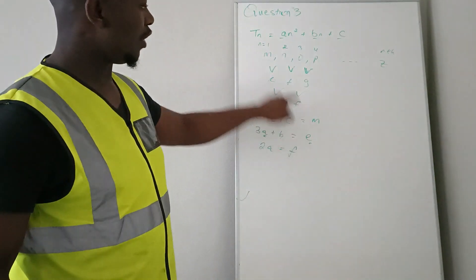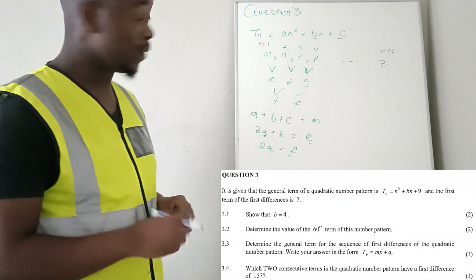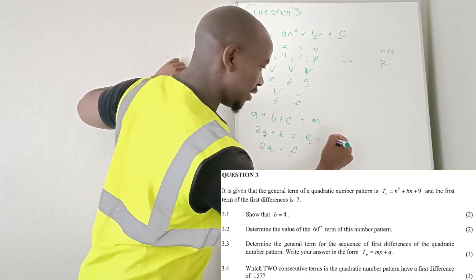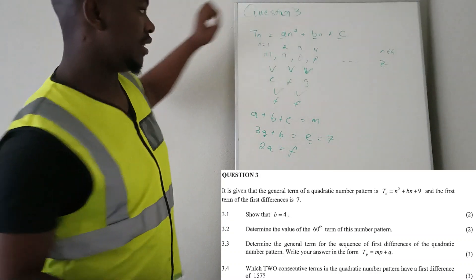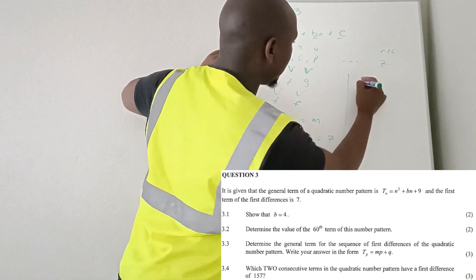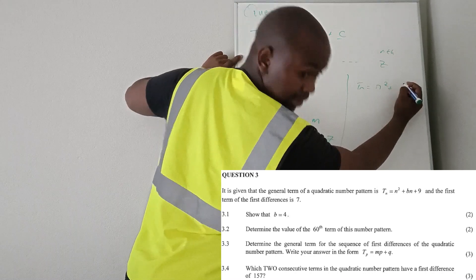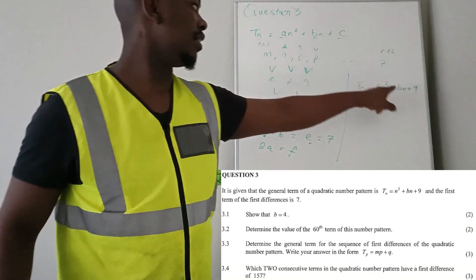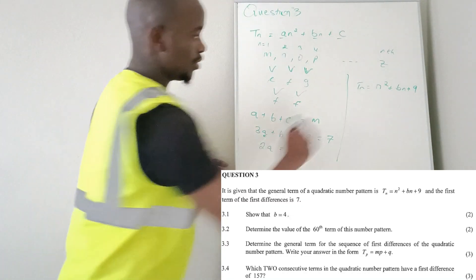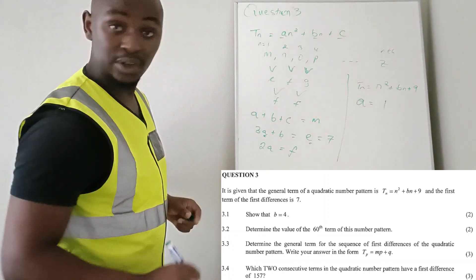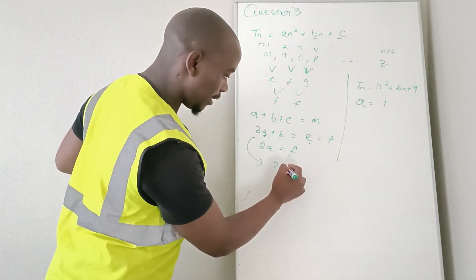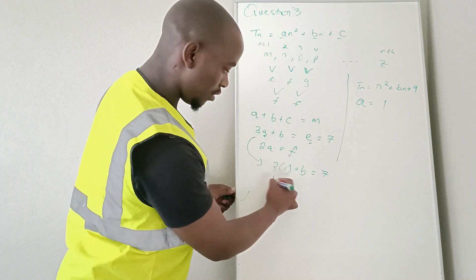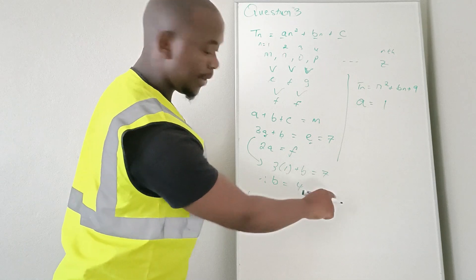We are given that the first term of the first difference, e, is equal to 7. From the equation Tn = n² + pn + 9, we can see that a = 1 and c = 9. So we use 3a + b = e: 3(1) + b = 7, therefore b = 4. We have shown that p is indeed equal to 4.